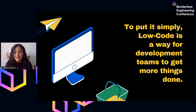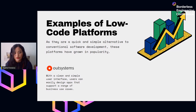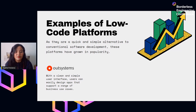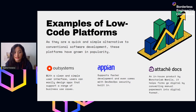To further understand how low-code platforms work, here are a few examples. As a good alternative to conventional software development, these platforms have grown in popularity. OutSystems offers a clean and simple user interface and supports a wide range of business use cases, making it one of the most popular low-code platforms right now. Appian sets itself apart with built-in dev security in their low-code platform. The one I'm going to demo in a moment is our very own Attaché Docs, an in-house product by Monster Lab Manila, whose goal is to help firms go digital by converting manual paperwork into digital format.